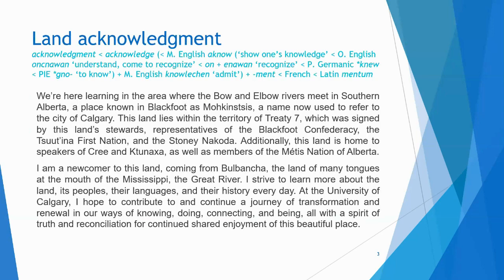We'll start with a land acknowledgement. We're here learning in the area where the Bow and Elbow Rivers meet in southern Alberta, a place known in Blackfoot as Malkinstsis, a name now used to refer to the entire city of Calgary. This land lies within the territory of Treaty 7, which was signed by representatives of the Blackfoot Confederacy, the Tsutdina First Nation, and the Stony Nakoda. Additionally, this land is home to speakers of Cree and Tunaha, and many other indigenous languages, as well as members of Métis Nation of Alberta, Region 3.